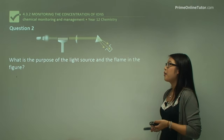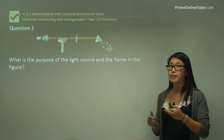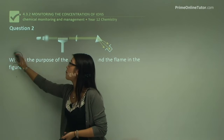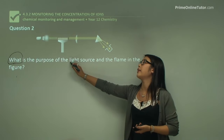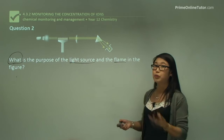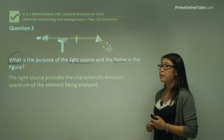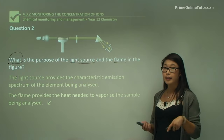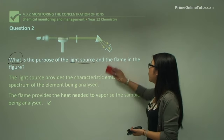Question two: what is the purpose of the light source and the flame? The light source provides the characteristic emission spectrum of the element being analyzed. The flame provides the heat needed to vaporize the sample being analyzed so that light can pass through it. We need to make sure we answer both parts of the question.